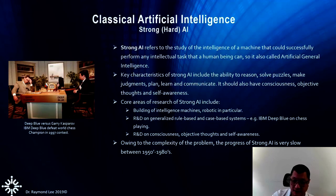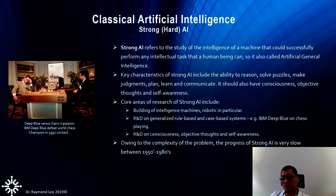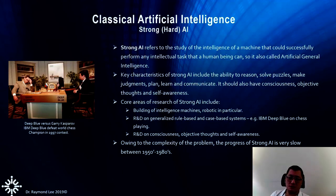The key characteristics of strong AI include the ability to reason, solve puzzles, make judgments, plan, learn, and communicate. It should also be conscious, have objective point of view, and self-awareness. As I always say, this is quite an impossible task — not a single one of those things is easy. Even the robotic mission alone is very difficult. There is much research on that — say for example the Deep Blue versus chess master in 1997.